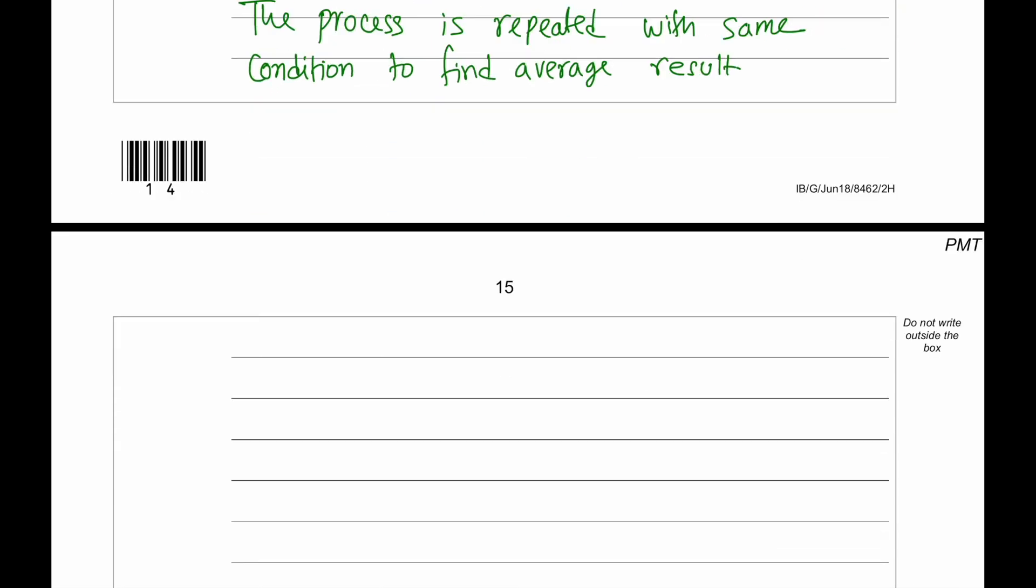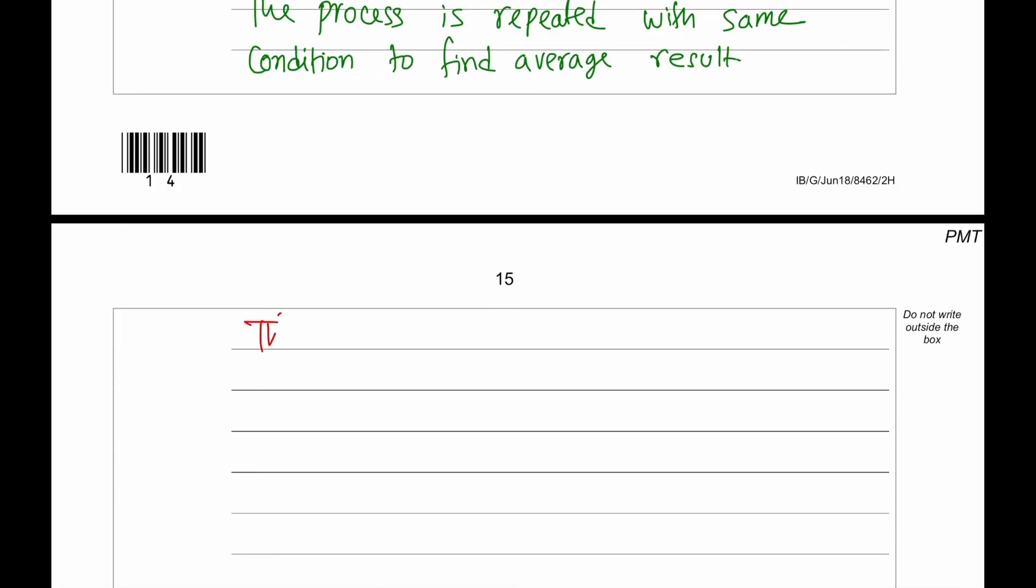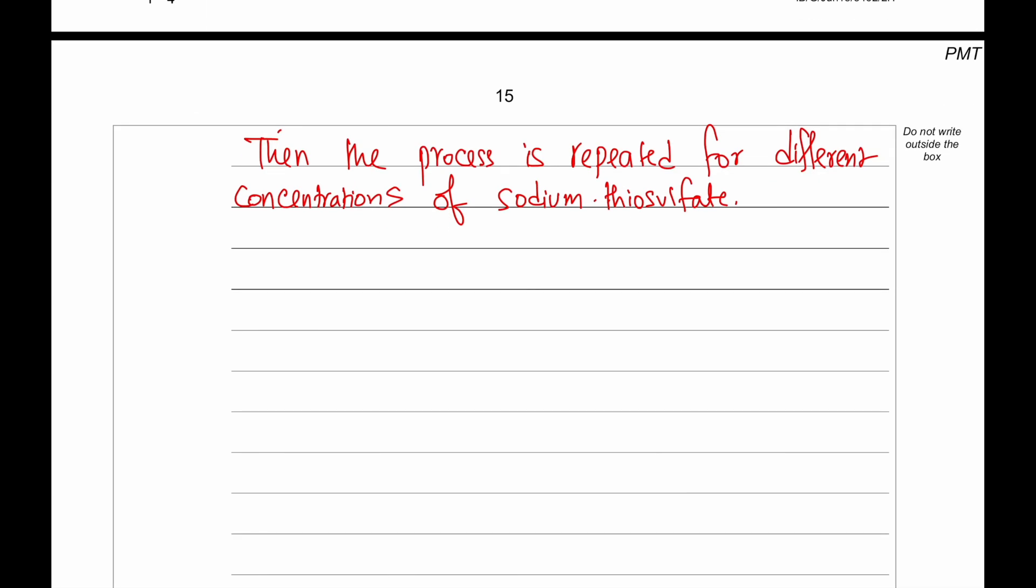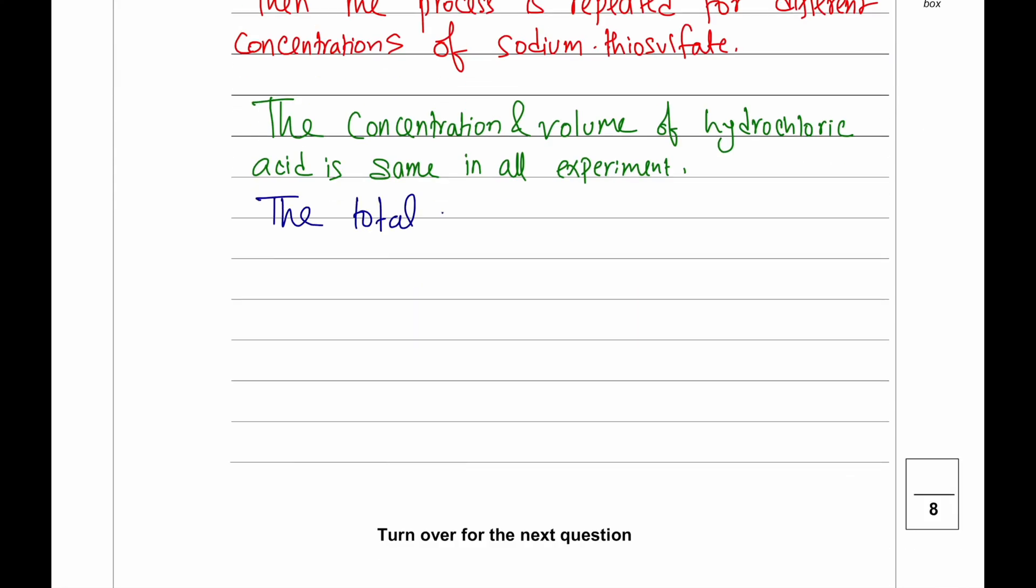Now, what are the things that we must keep constant? We need to keep the concentration of hydrochloric acid, the volume of hydrochloric acid, and always we need to keep the total volume of sodium thiosulfate solution constant. And in the end, the result should be or could be, higher the concentration of sodium thiosulfate, the faster the rate of reaction. So, it will take the least amount of time.